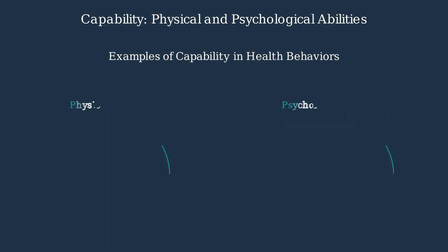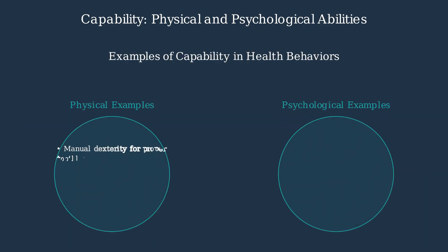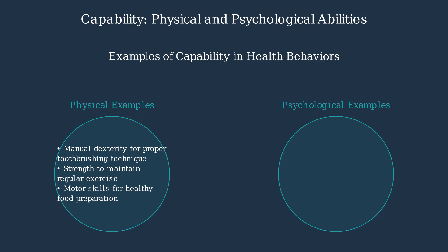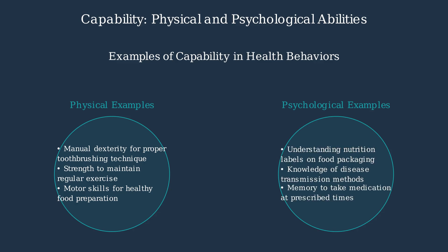Let's look at some examples of capability in health behaviors. Physical capability includes manual dexterity for proper toothbrushing, strength for regular exercise, and motor skills for food preparation. Psychological capability involves understanding nutrition labels, knowledge of disease transmission, and memory to take medication correctly.